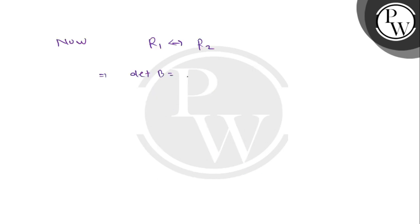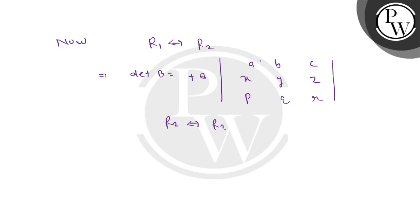After the interchange, the minus becomes plus, so we get plus 8 outside. The determinant inside becomes: a, b, c / x, y, z / p, q, r. Then we interchange r2 with r3, so this implies determinant of B equals minus 8 outside.